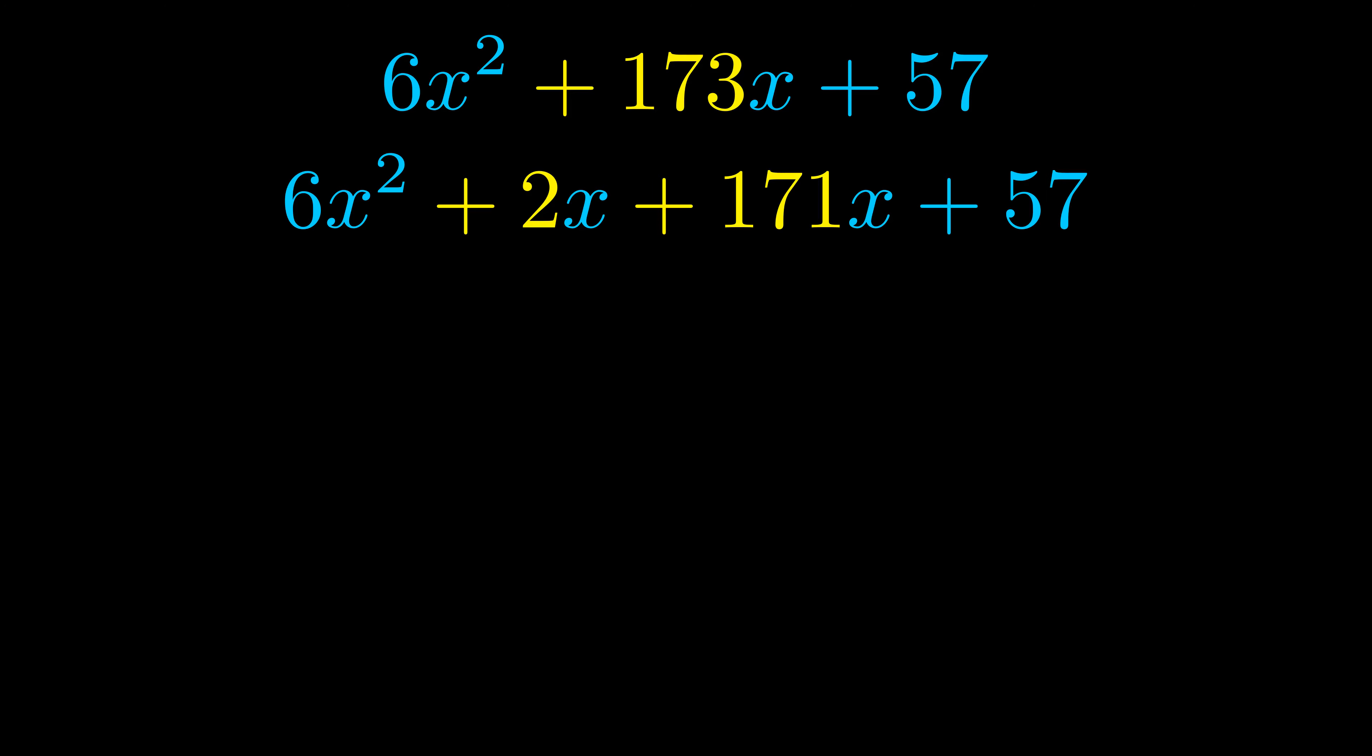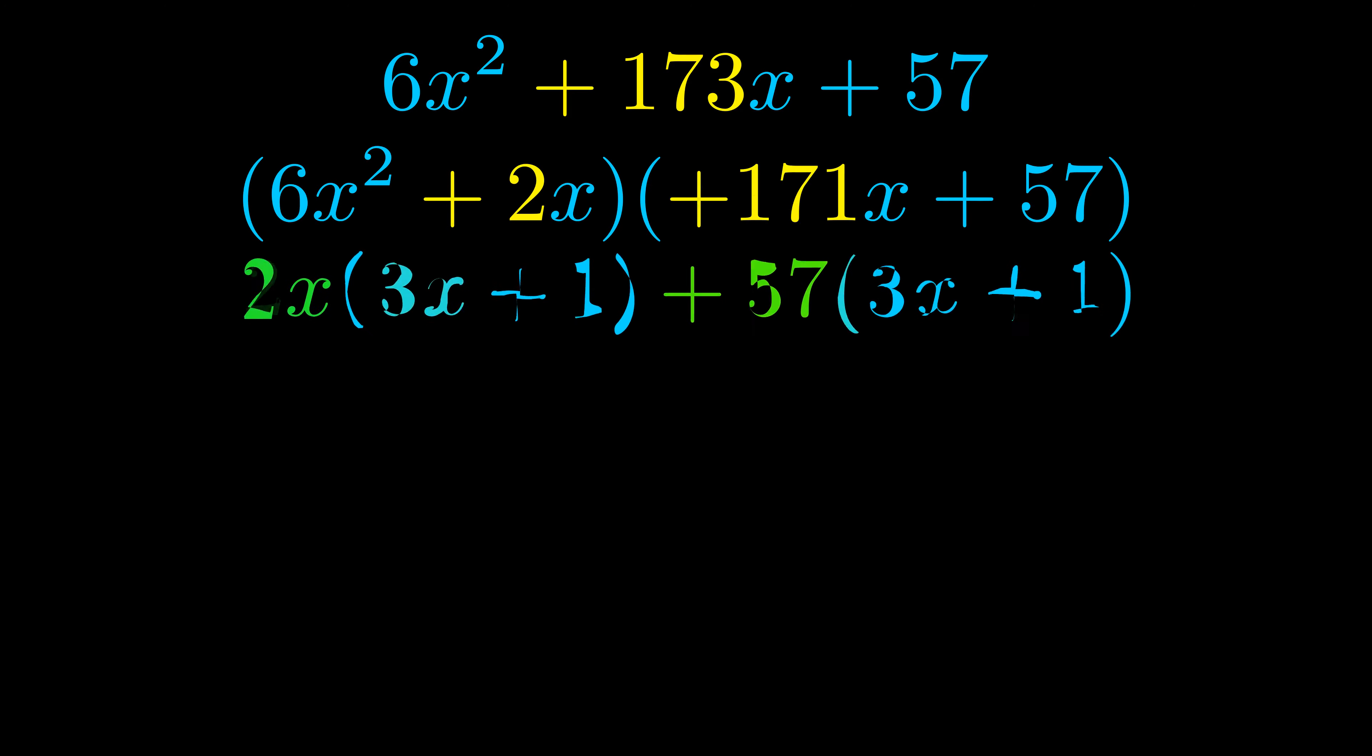Once we've done this we go ahead and put parentheses around the first term and the last term so that we can take the greatest common factor out of both terms. We can see the greatest common factor is now outside in green. Notice also how what remains inside of the parentheses is the same in both cases. The blue values are the same.